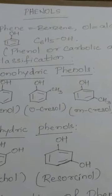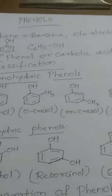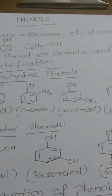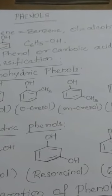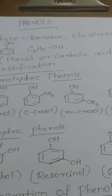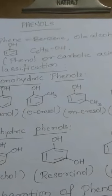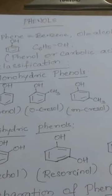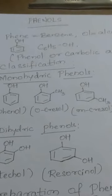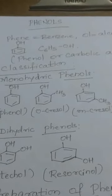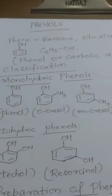This phenol is also called as carbolic acid. The reason why it is also called as carbolic acid is that it was first isolated from coal tar. Remember, the hydroxy group is present in both alcohols and phenols. In case of alcohols, the hydroxy group is bonded to a saturated carbon atom, whereas in case of phenols, the hydroxy group is bonded to an unsaturated carbon atom.